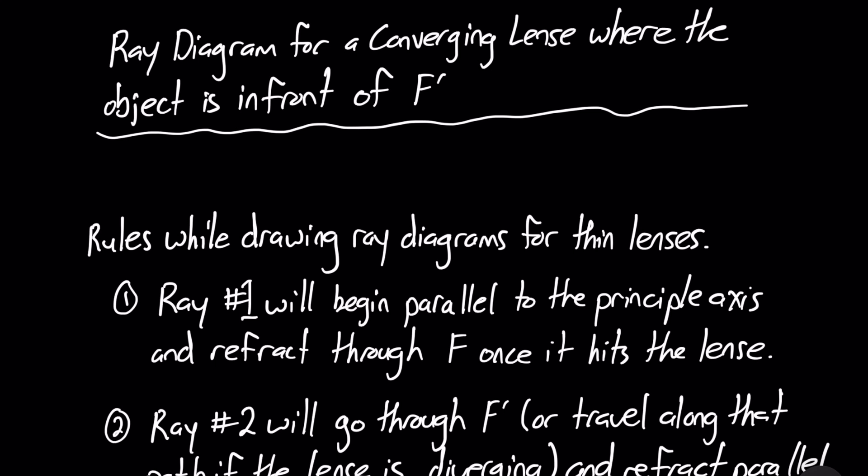Hello everyone, welcome back to JD Science Prep. Today we have a short video relating to drawing a ray diagram for a converging lens where the object is in front of our secondary focal length.